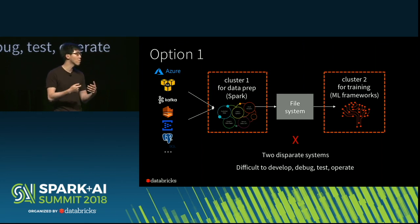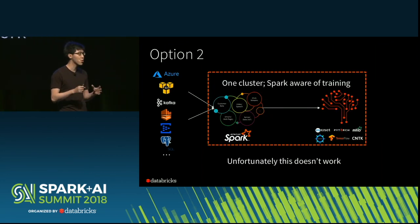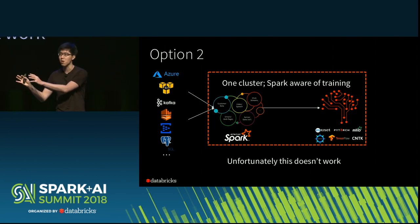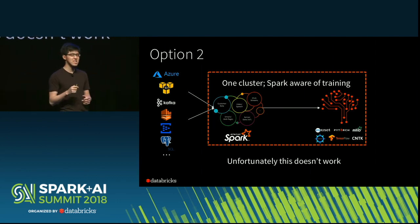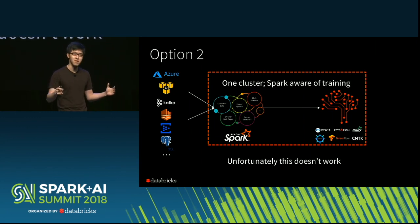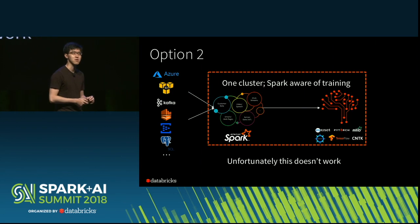Instead, we see more and more users gravitating towards a second option: create one cluster, have Spark running in that cluster, and Spark actually launches the second part of the job, which runs the machine learning frameworks. Unfortunately, this doesn't quite work today. Some of you might already be doing it, but let me show you why it doesn't work by taking a look under the hood at the Spark scheduler.